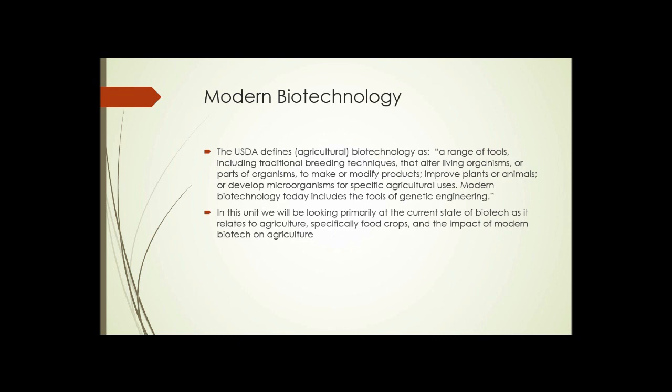Modern biotechnology, as defined by the USDA, is a range of tools, including traditional breeding techniques that alter living organisms or parts of organisms to make or modify products, improve plants or animals, or develop microorganisms for specific agricultural uses. Modern biotechnology today includes the tools of genetic engineering. In this unit, we're going to be looking primarily at the current state of biotech as it relates to agriculture, specifically food crops, and the impact of modern biotech on agriculture — much of which relates to genetic engineering or genetic modification.